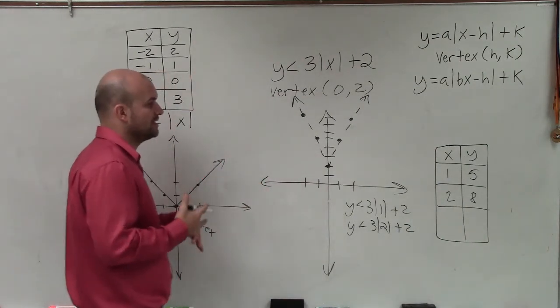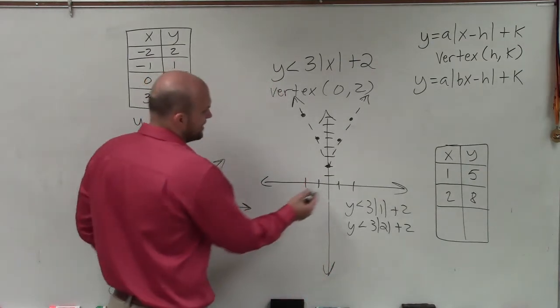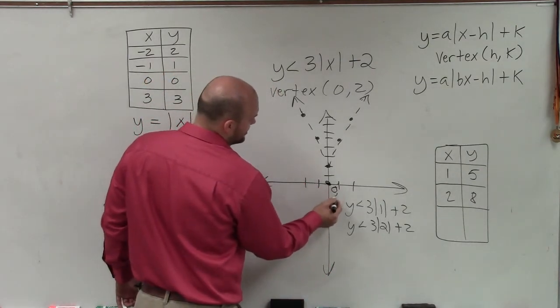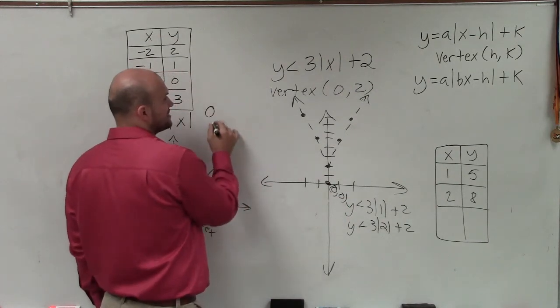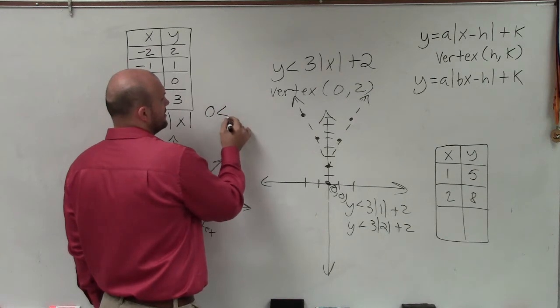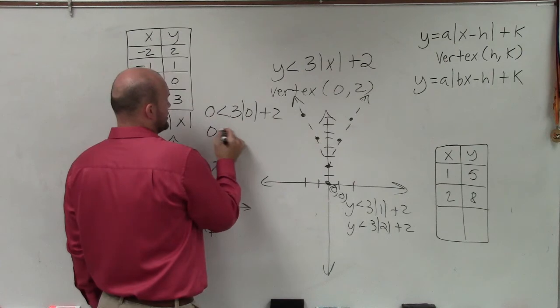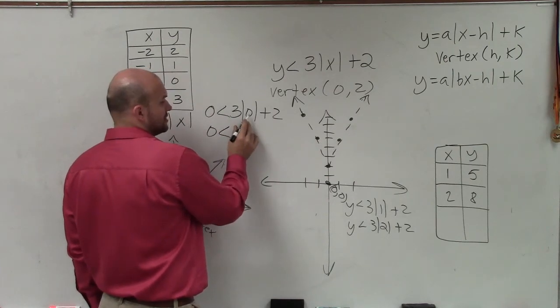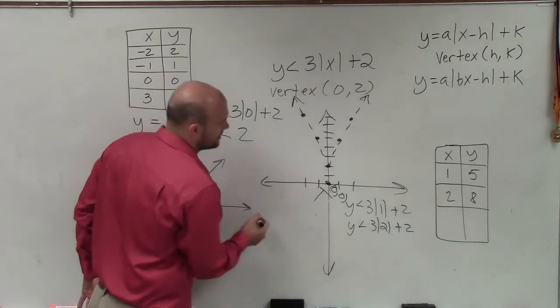But now we want to determine our shading. Are we going to be shading inside or outside of our absolute value? So to do that, as long as the equation doesn't go through (0, 0), we're going to test (0, 0). So I'm just going to plug 0 in for y and for x. So I have 0 is less than 3 times the absolute value of 0 plus 2. 0 is less than absolute value of 0, which is 0. 0 times 3 is 0 plus 2. 0 is less than 2, which is true.